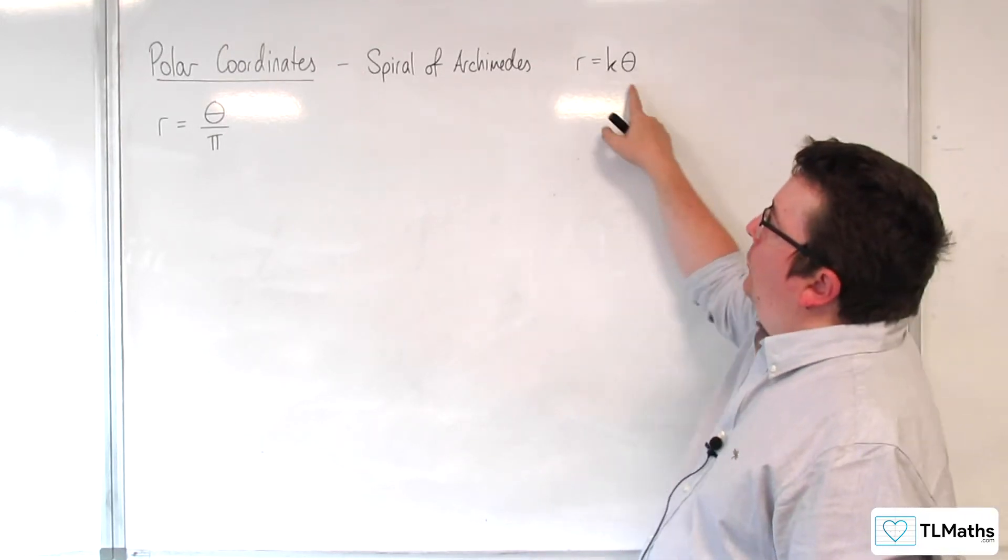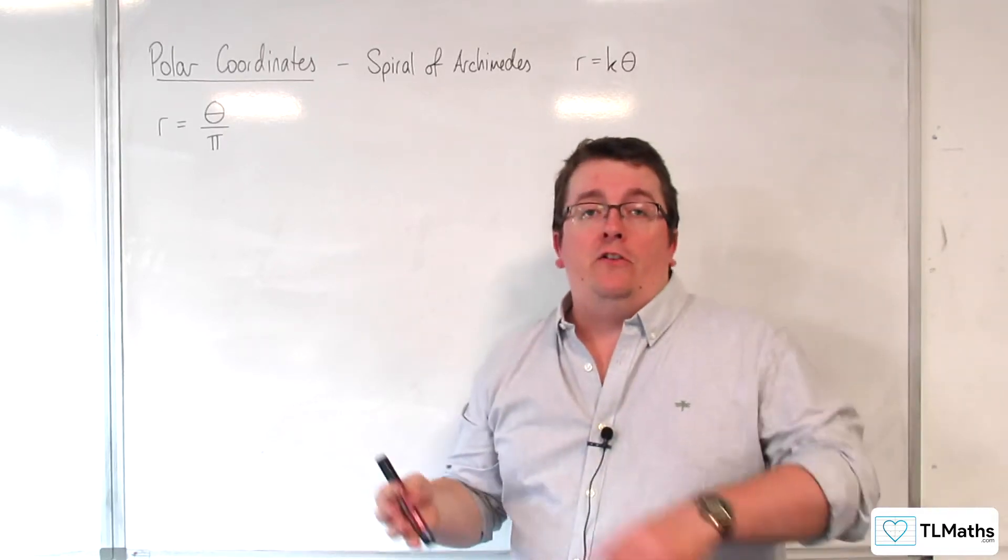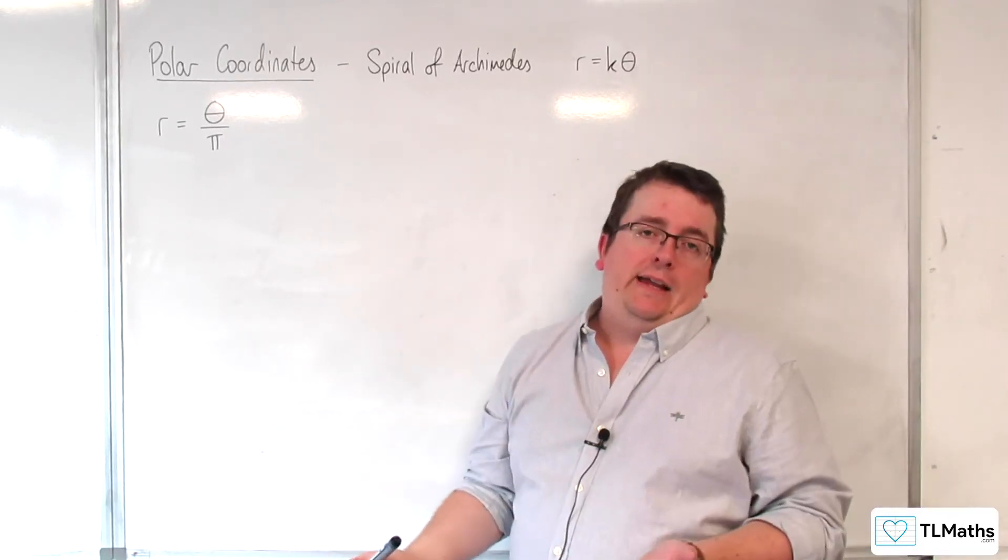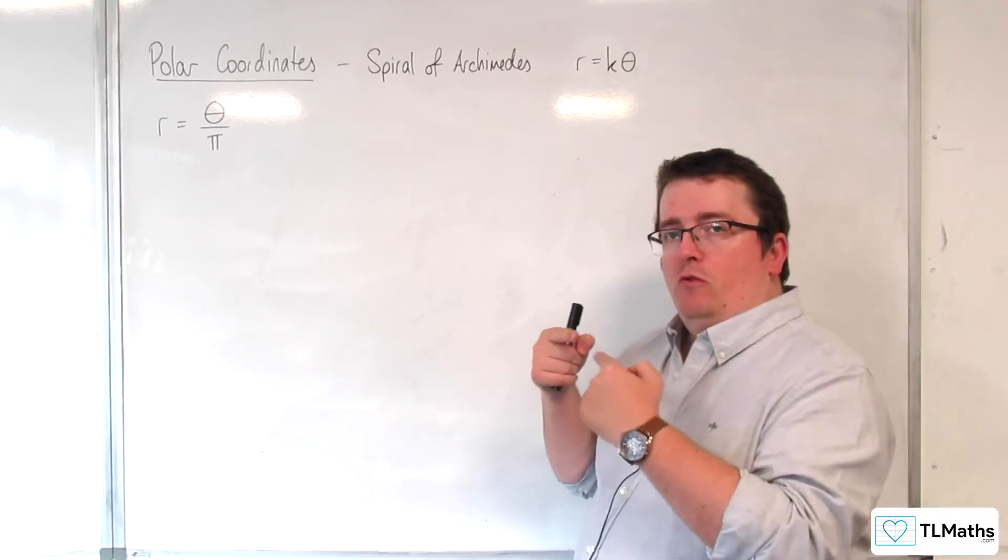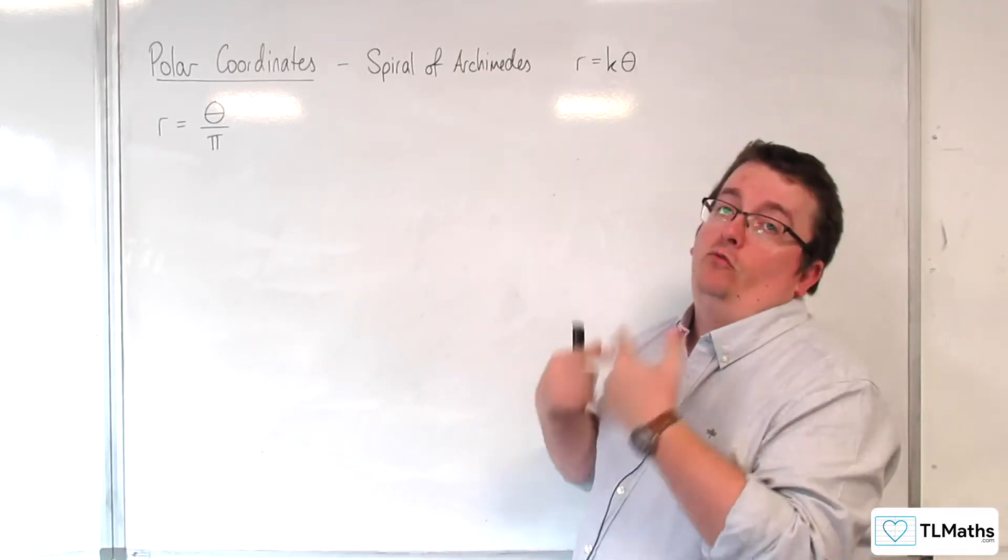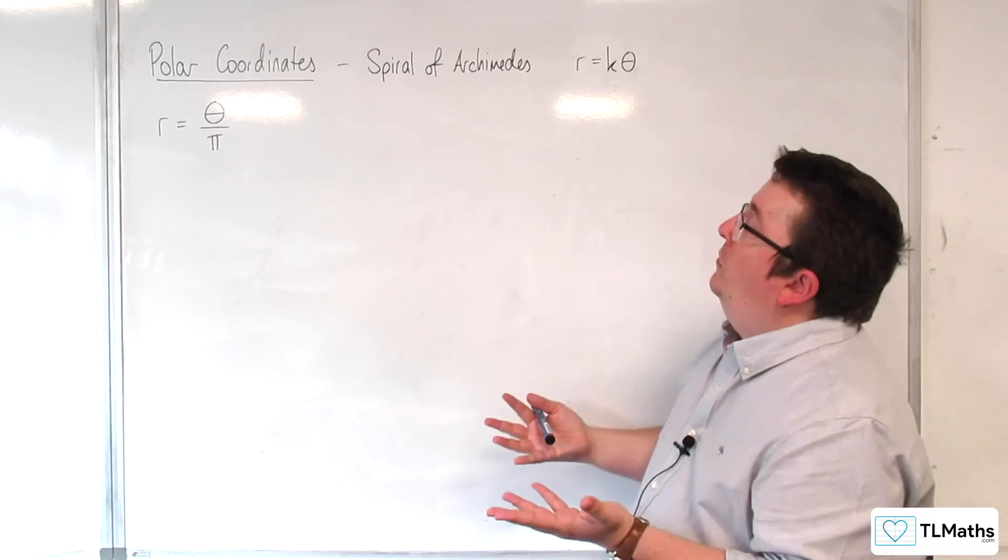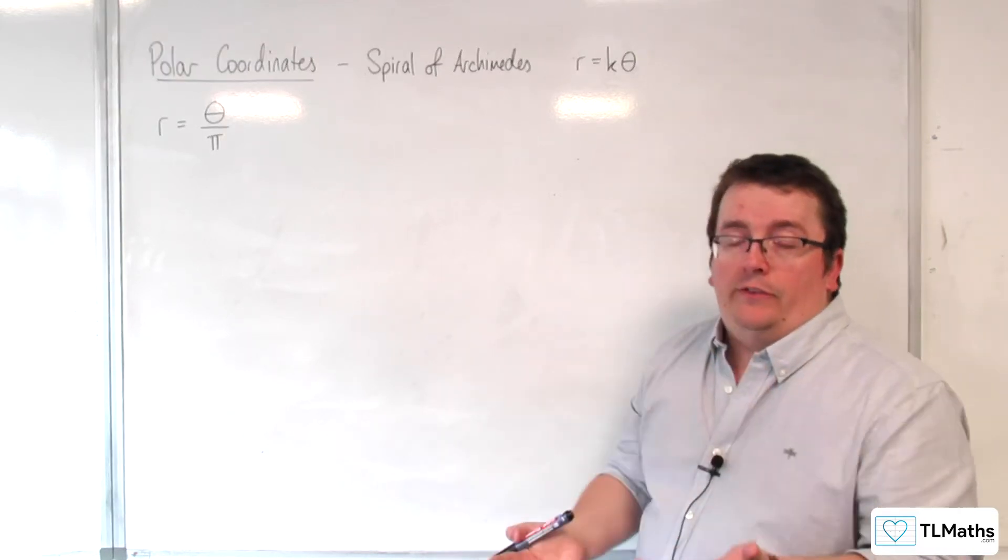they are written as r equals k times theta. You can also have r equals a plus k theta, which really just starts the spiral further along the x-axis rather than having it start at the pole.